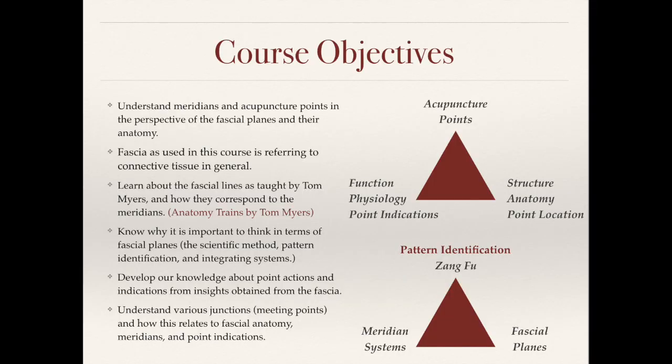The second point reads: fascia as used in this course is referring to connective tissue in general. There are various types of connective tissue — fascia surrounds the muscles as well as the organs, but we also have tendons, ligaments, and numerous other types. For simplicity, we're going to use fascia in a more general way to refer to connective tissues.